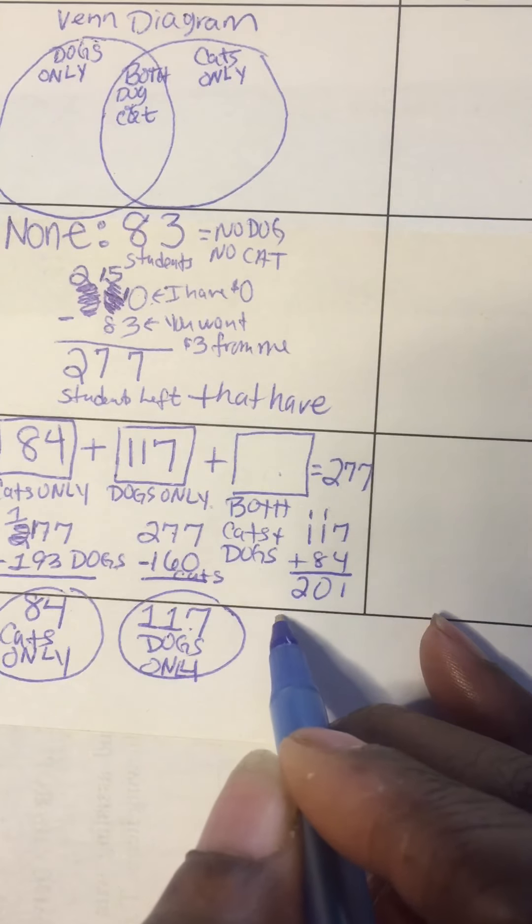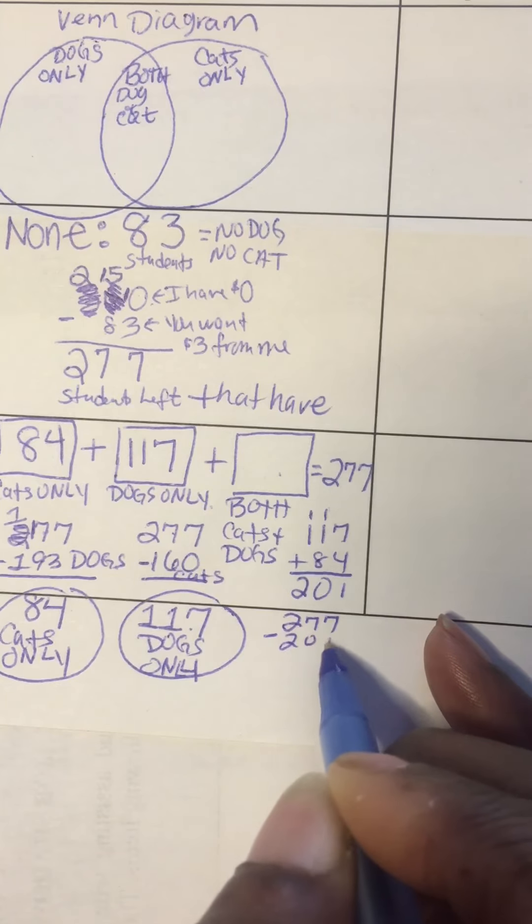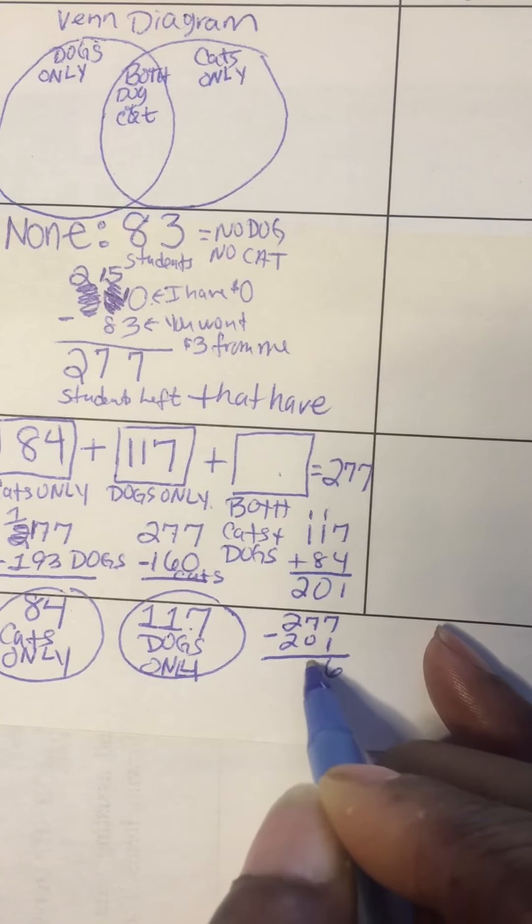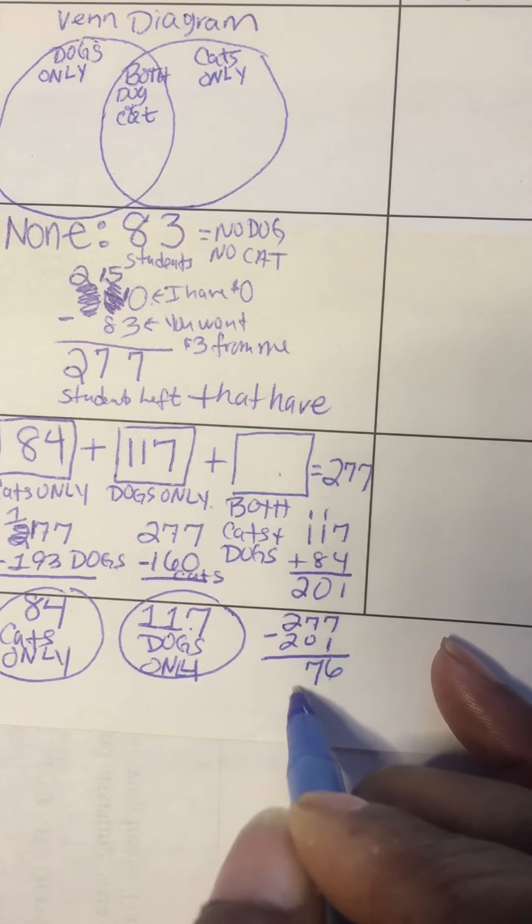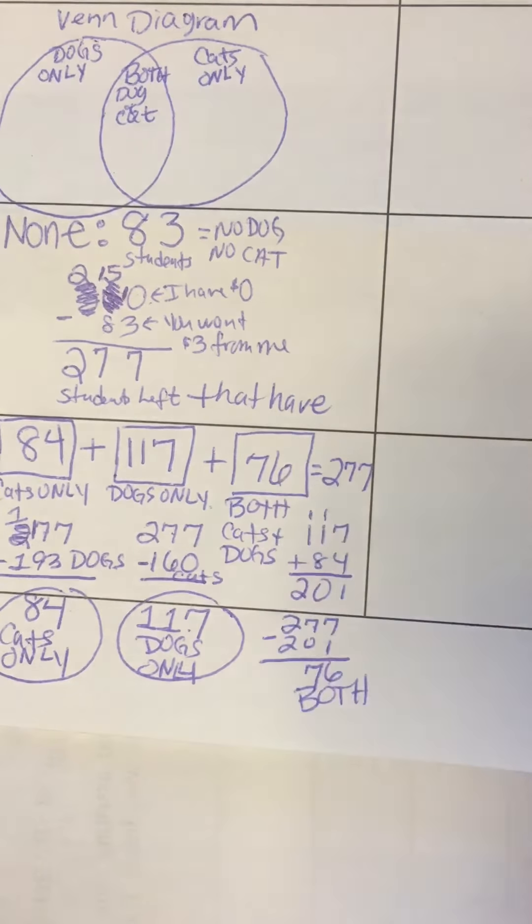So we're missing, so you do 277 minus 201. 7 minus 1 is 6, 7 minus 0. So 76 have both cats and dogs.